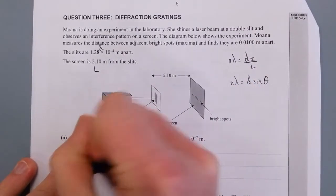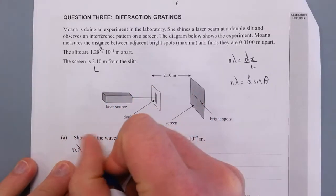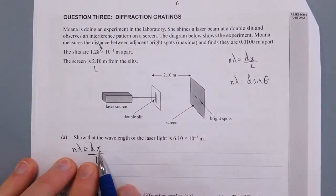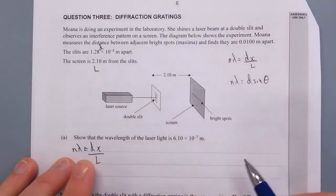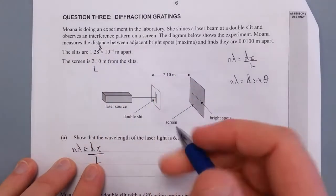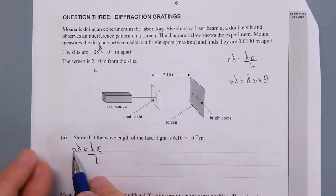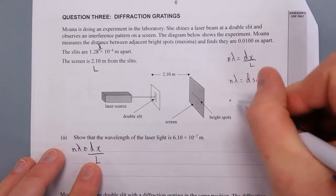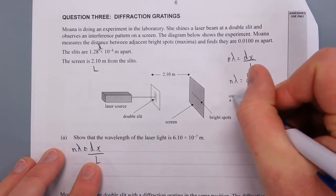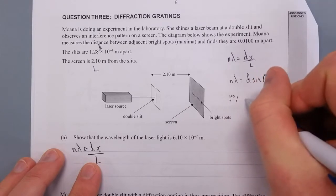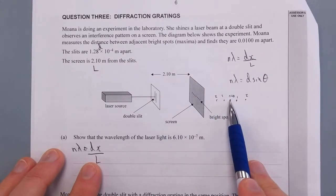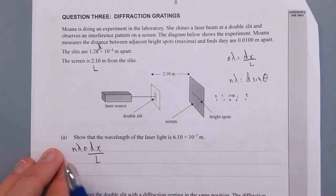The slit separation is D, 1.28. And we're going to use n equals 1, just for the first maxima. If you've got the maximas here, that's a central one, that's n equals 0 because there's no path difference. Then we've got 1, 2, and then on the other side, 1, 2. We're just going to use the distance from the central maxima to n equals 1, so n can just be equal to 1.